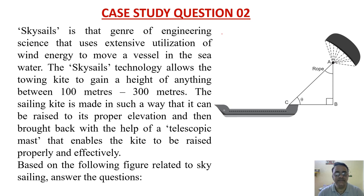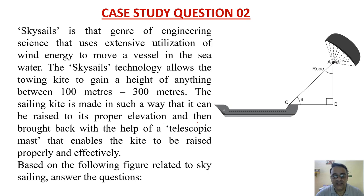Now moving to case study question number two. Sky sails is a genre of engineering science that uses wind energy to move a vessel in the sea. The sky sails technology allows a towing kite to gain a height of 100 to 300 meters. Based on the figure related to sky sailing, we answer the following questions.